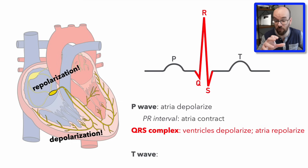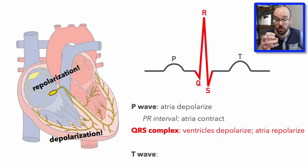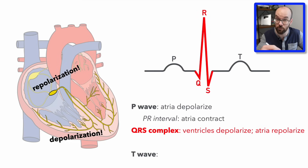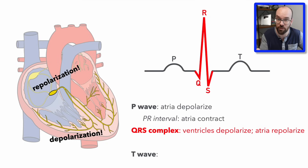So during the QRS we have depolarization of the ventricles and repolarization of the atria — the ventricles contract while the atria stop contracting. The big R spike is caused by ventricular depolarization; we can't see the atrial repolarization on the ECG because it's hidden by the large ventricular depolarization, but both events are happening during the QRS complex.